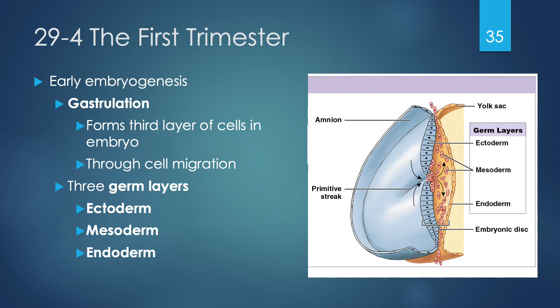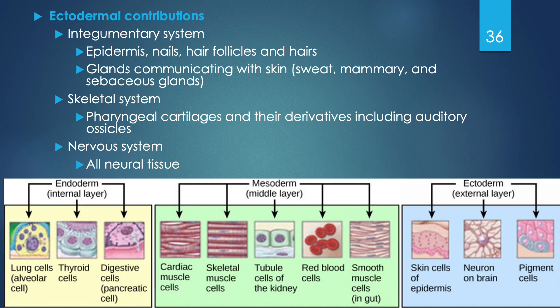Gastrulation produces three germ layers: the ectoderm, the mesoderm, and the endoderm. The three germ layers are visible in the image on the right. Of these three, the ectoderm is the most external layer. The ectoderm will develop our integumentary system, skeletal system, and nervous system — things that are more exterior to the body. The integumentary system includes hair, skin, nails, and the glands that communicate with our skin.